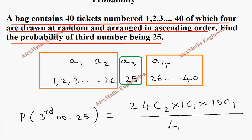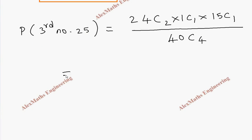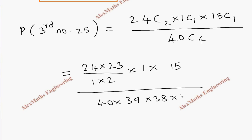The total selection is out of 40 we select 4. So we're going to evaluate this: 24C2 is 24 into 23 by 1 into 2, 1C1 is 1, 15C1 is 15, whole divided by 40 into 39 into 38 into 37, whole divided by 1 into 2 into 3 into 4.